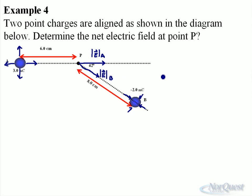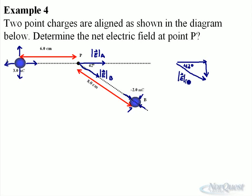What we're going to do first is break the electric field from B — determine what it is, then find its x component and its y component. The electric field from A is only in the horizontal direction, but the electric field from B is going to be at a 42 degree angle. We're going to look for the electric field from B and we'll need its x component and its y component, then sum it up with the electric field from A, which has an x component only. So when I deal with my components, I will have two x's and one y to redraw.